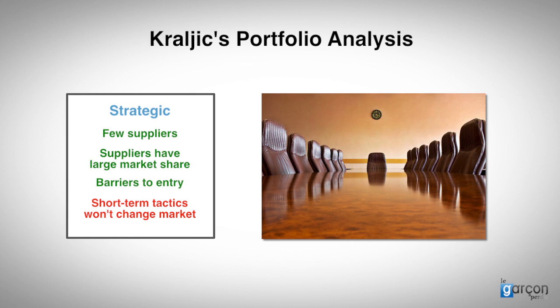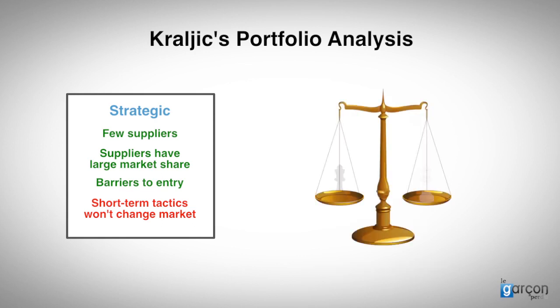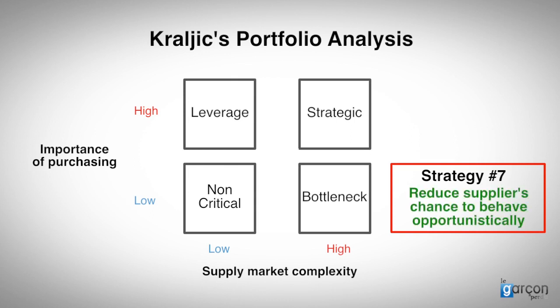The categories in the strategic quadrant are likely to be amongst the highest spend categories for the buyer, with high importance. Does this mean that the buyer is a big buyer and has lots of market power? Not usually. Unless you are the biggest buyer in the market, it is likely that the balance of power lies with the suppliers. Accordingly, strategy 7 seeks to reduce the chance for the supplier to behave opportunistically through entering into a cooperative relationship with the supplier.